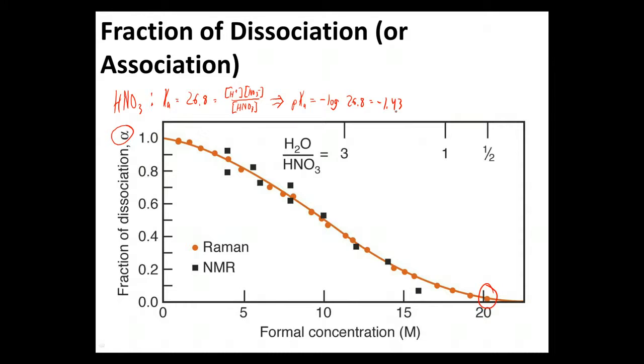But unpack that a little bit. Remember, we've said that our pKa is typically going to be on the scale of zero, or realistically more like 1, to 14. How is this a negative number? And what does that tell us?